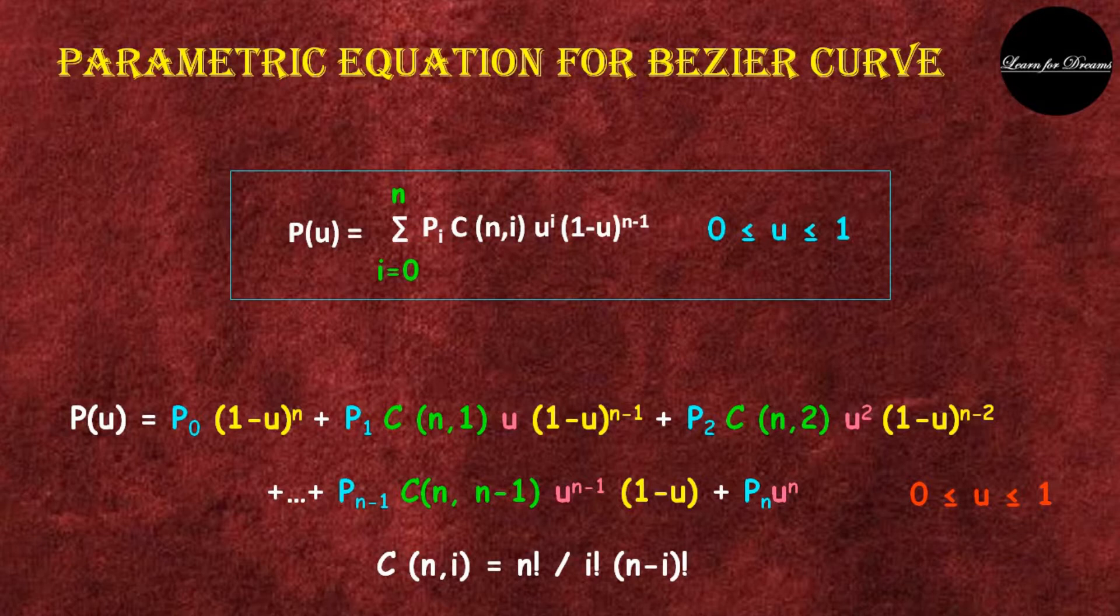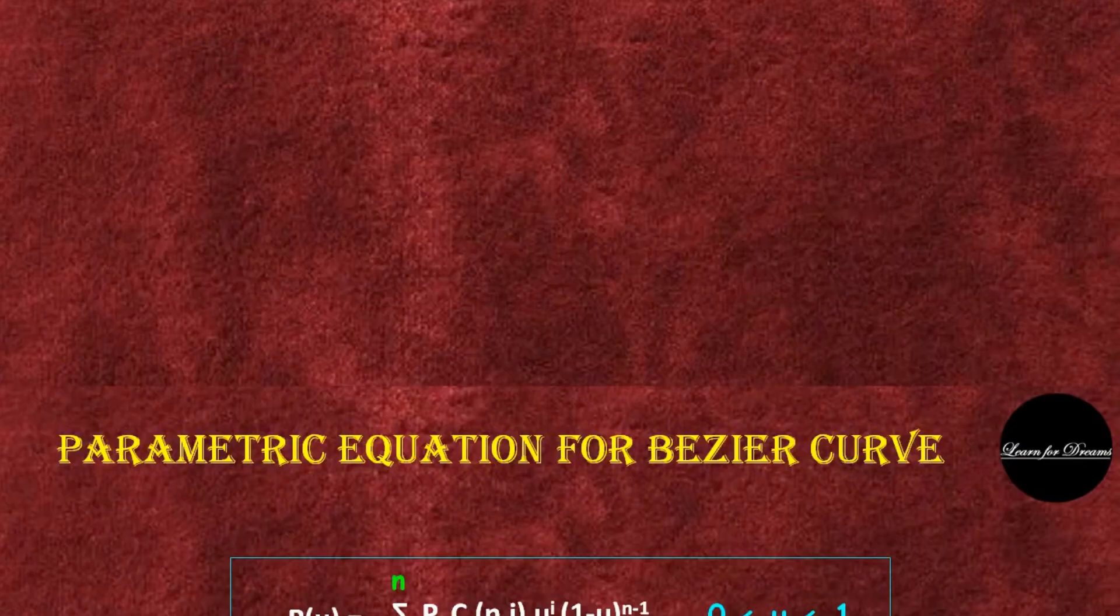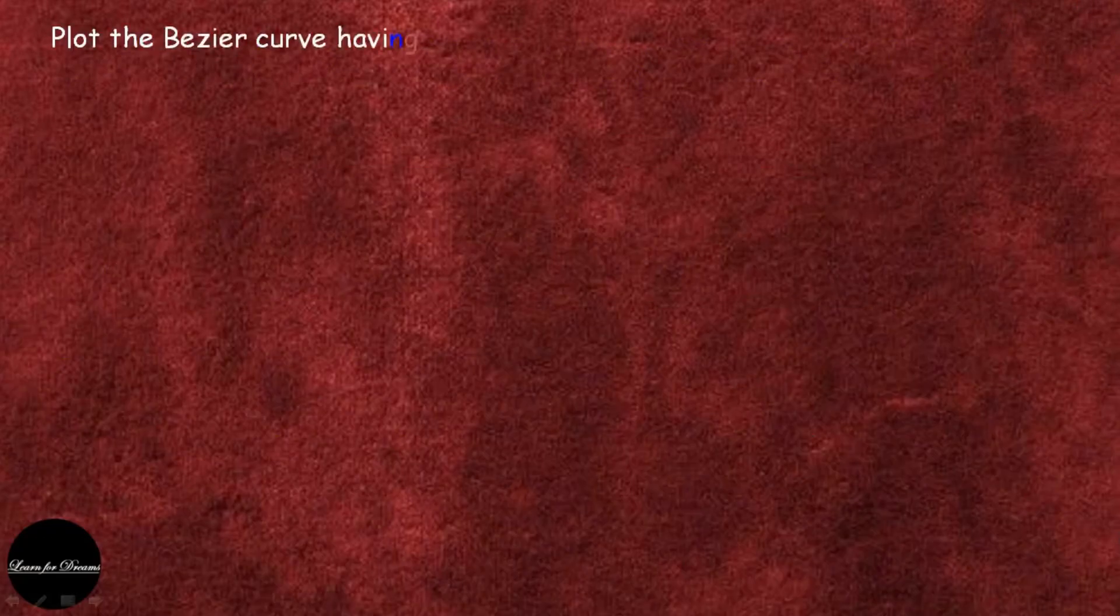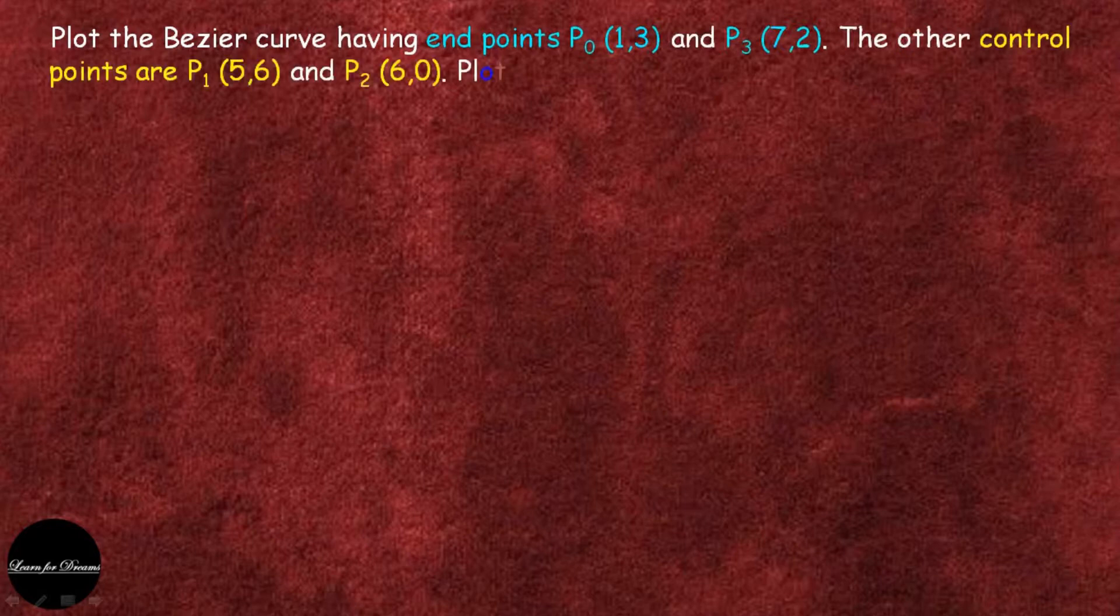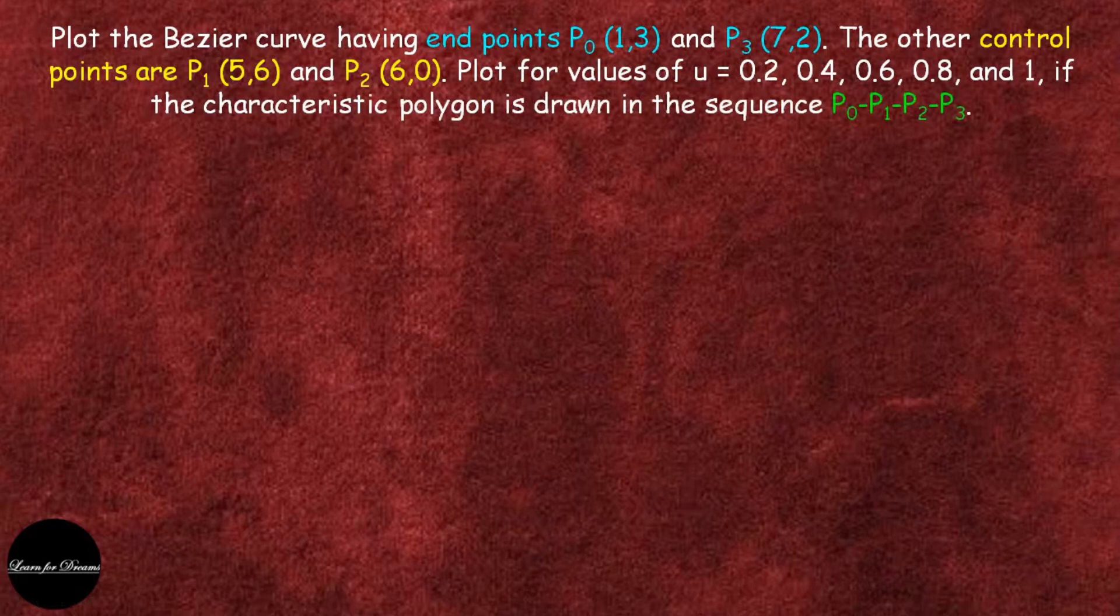This is the binomial expansion. Let's understand it by an example. Plot the Bezier curve having end points P0(1,3) and P3(7,2). The other control points are P1(5,6) and P2(6,0).